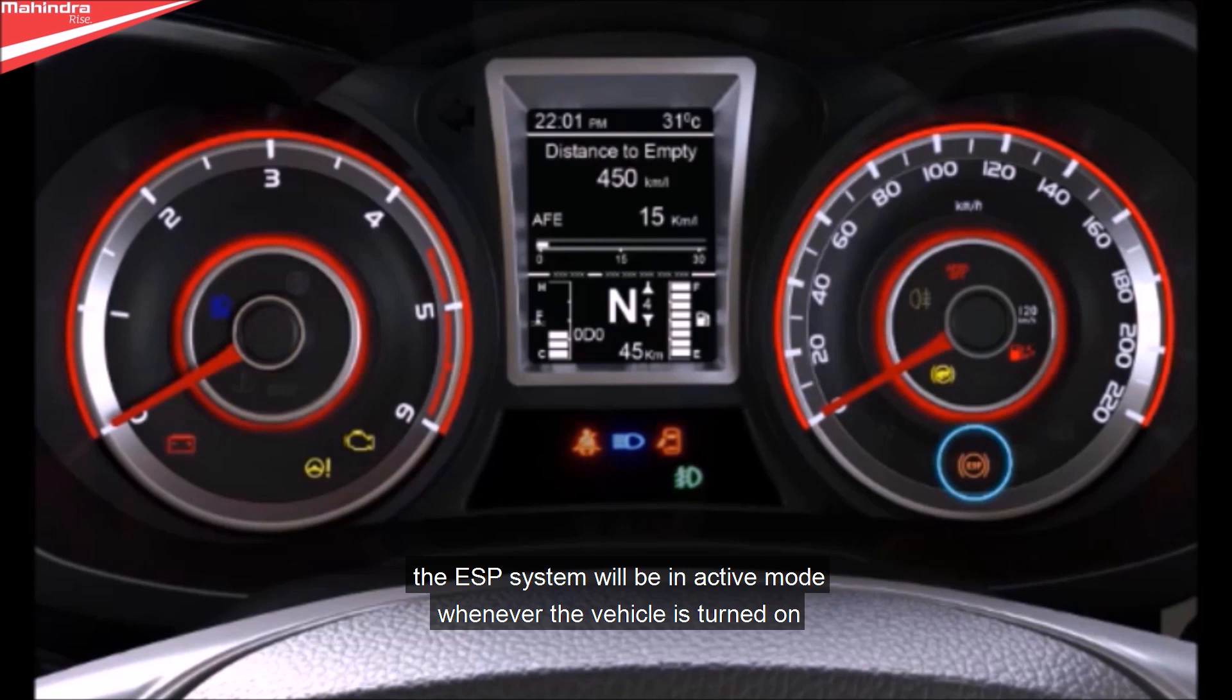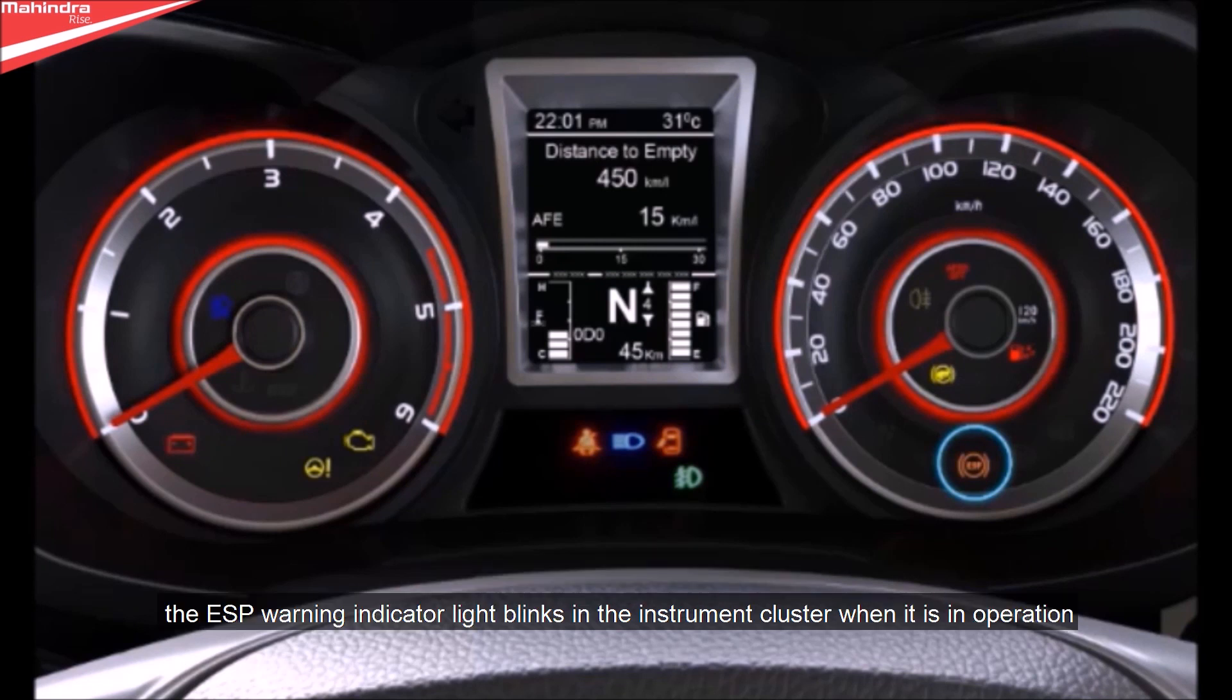ESP on: The ESP system will be in active mode whenever the vehicle is turned on. The ESP warning indicator light blinks in the instrument cluster when it is in operation.